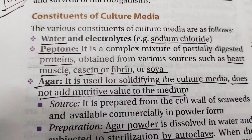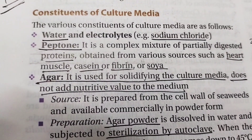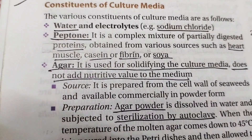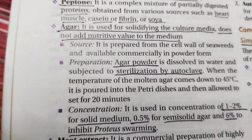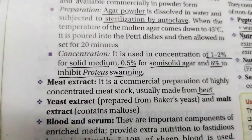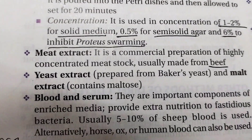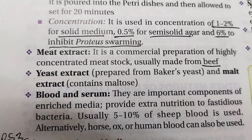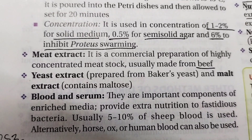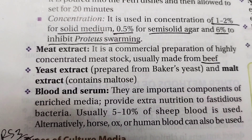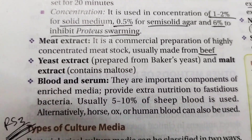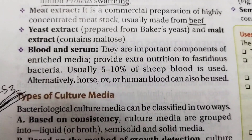The constituents of cultural media are water and electrolytes, peptone, agar and meat extract, yeast extract, and blood and serum. These are all added in different proportions and different types of media are created for bacterial growth.